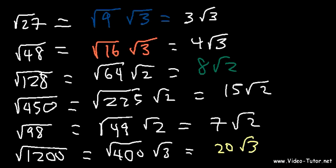That's how you simplify radicals with an even index number. If you don't see a number in the radical sign, there's an invisible 2. Now, what about simplifying cube roots? You need to know your perfect cubes. We're going to go over the perfect cubes up to 10.